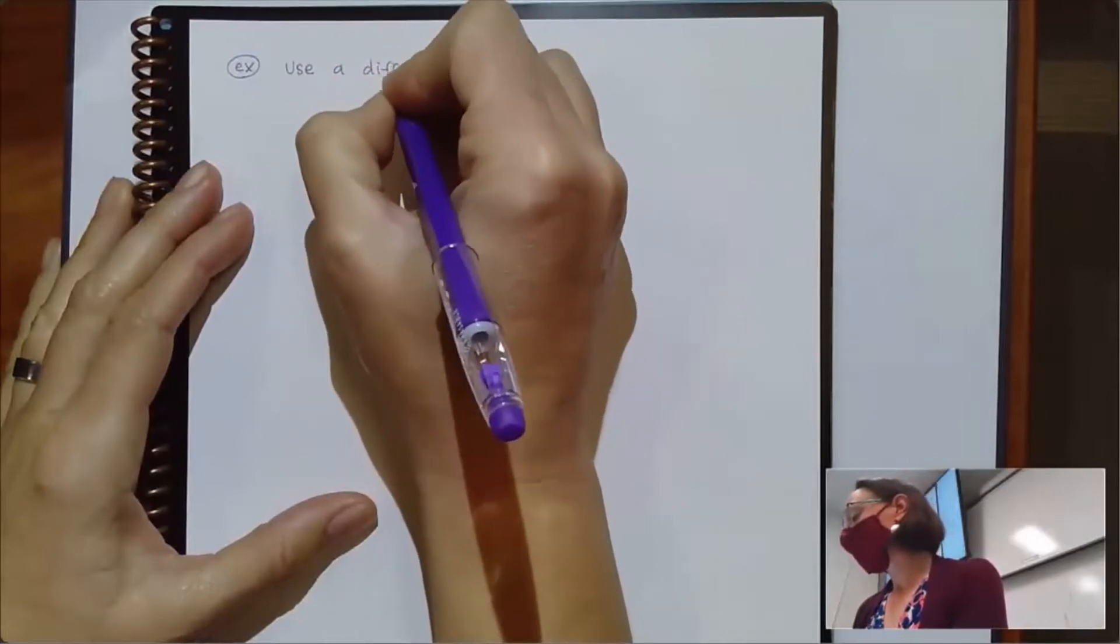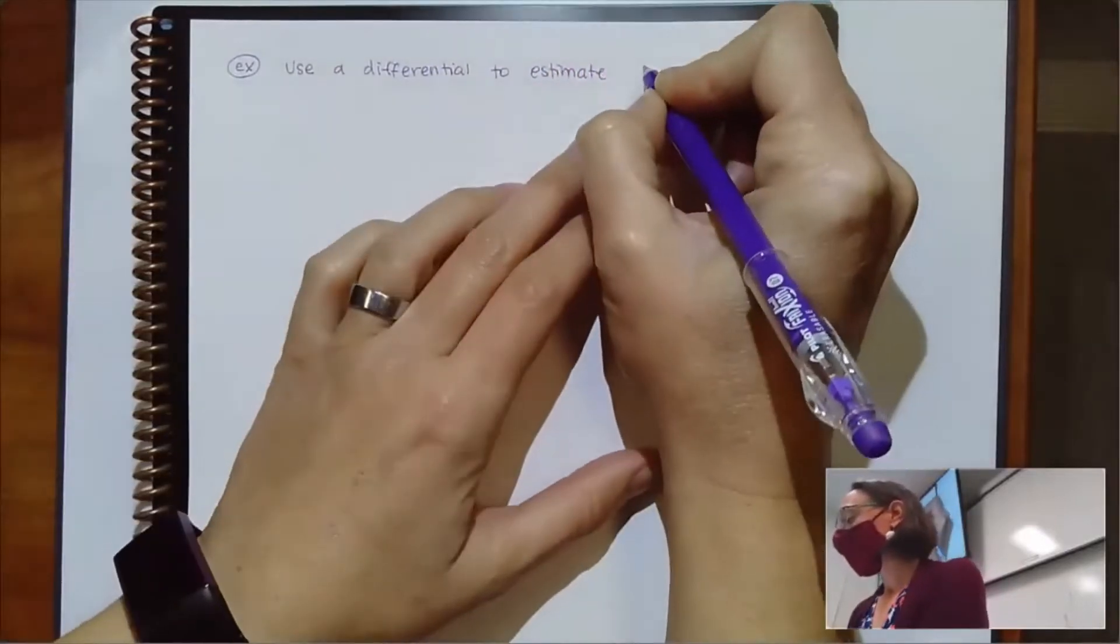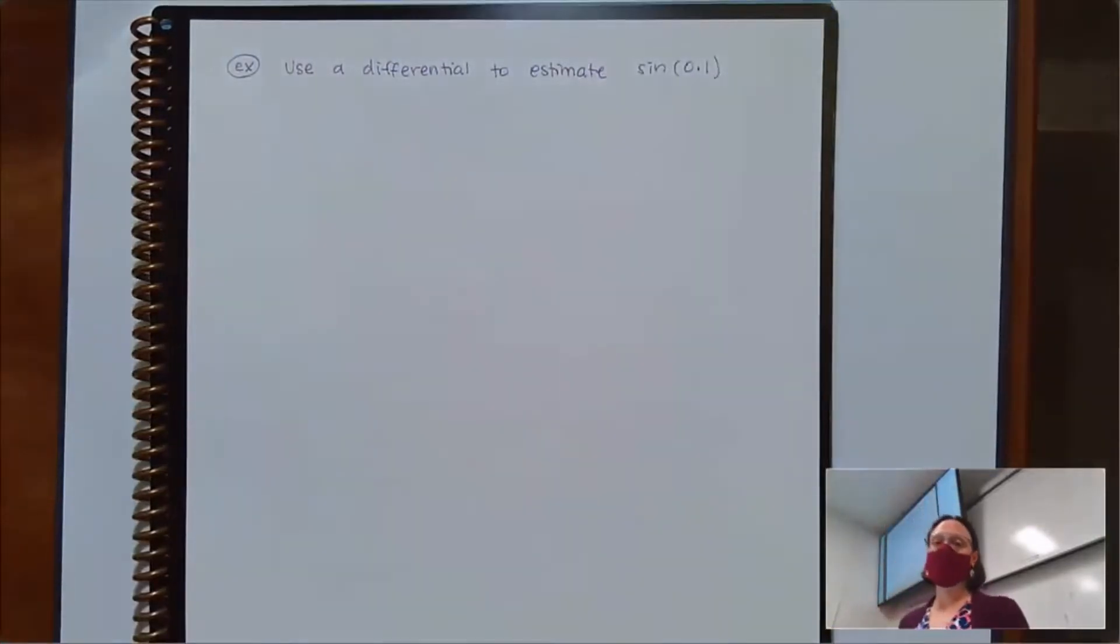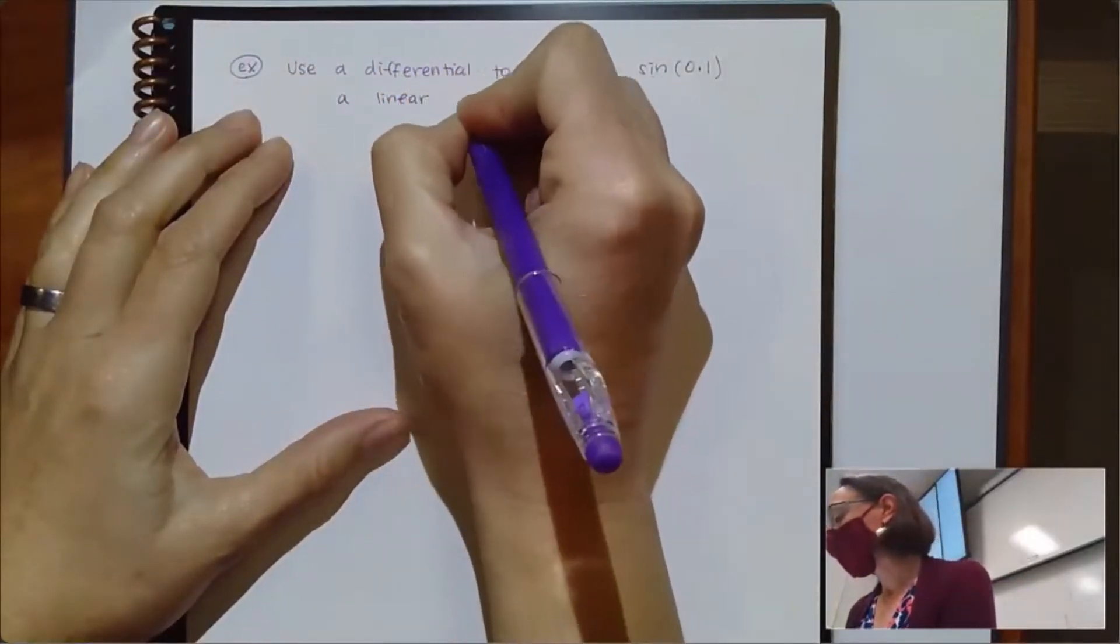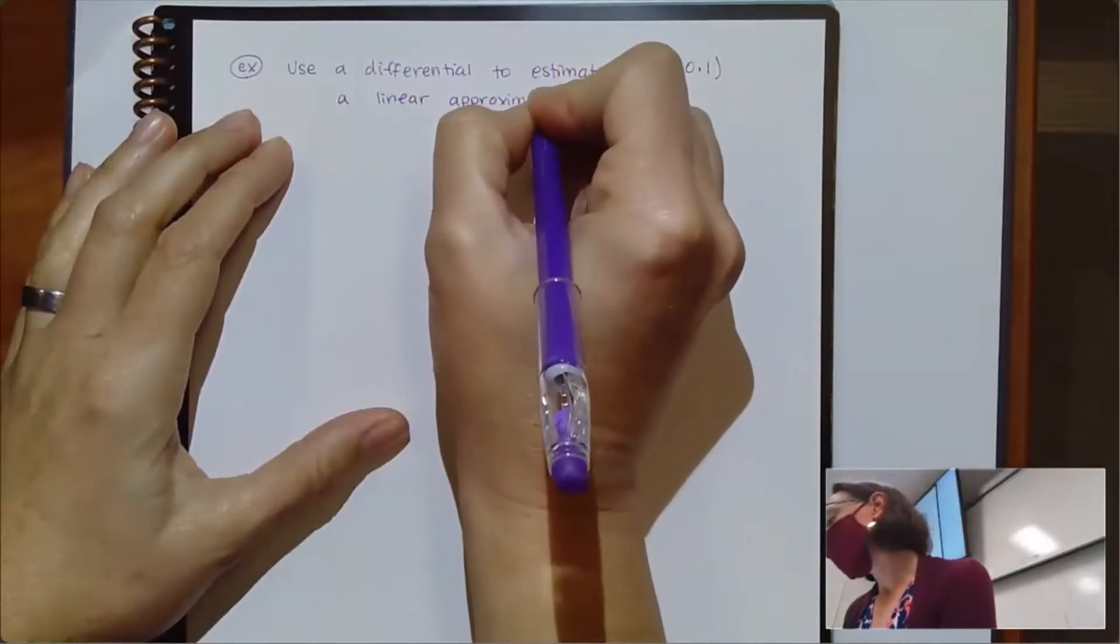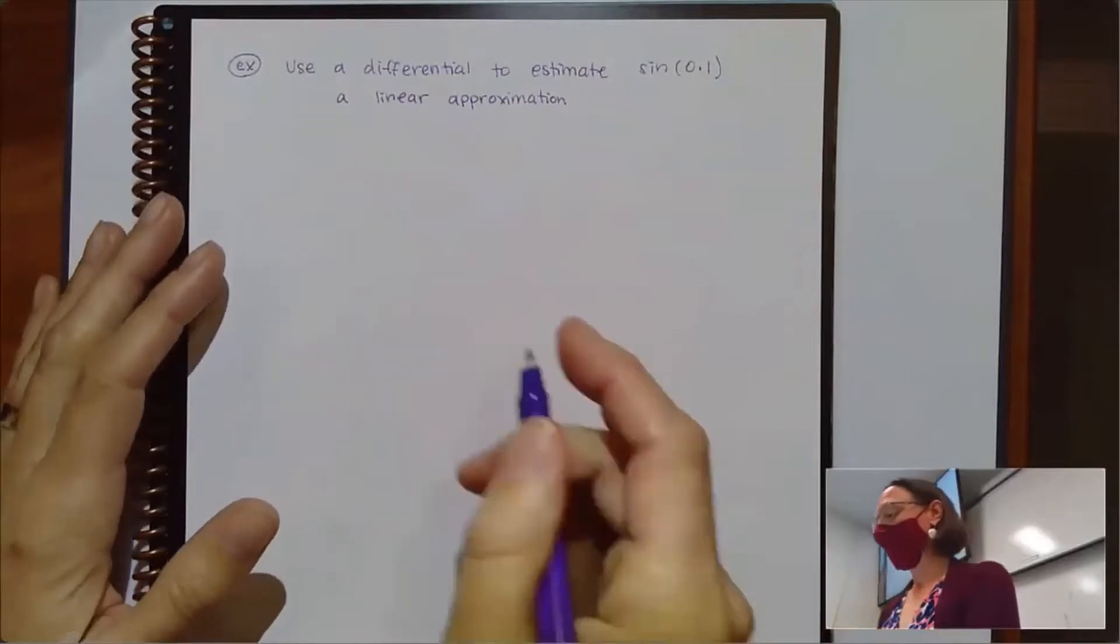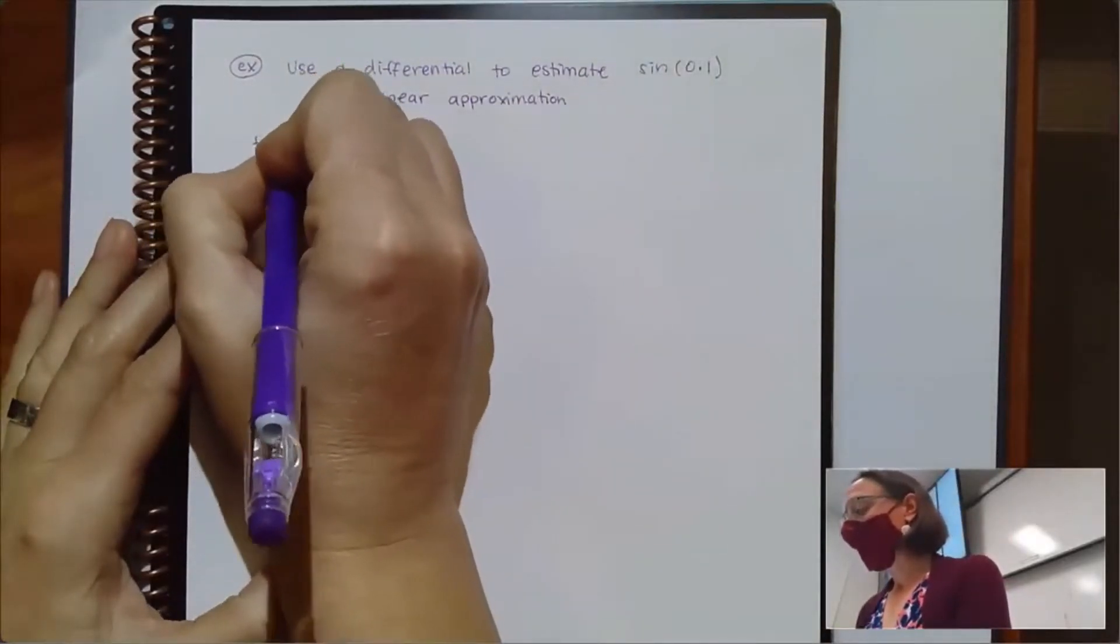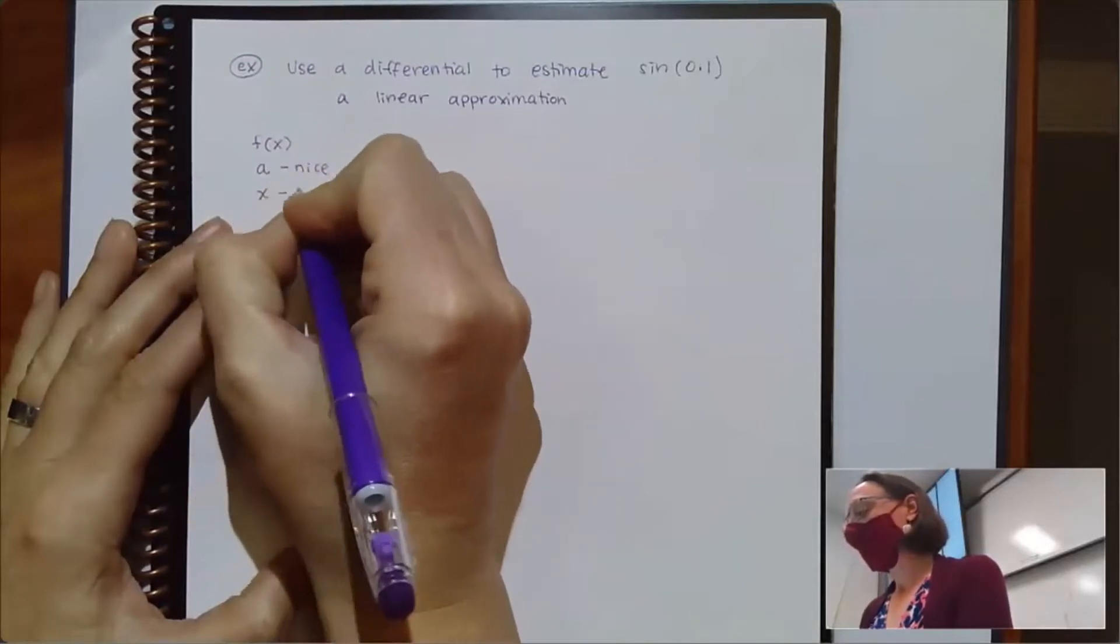Use a differential to estimate sine of 0.1. Sure, why not? So first of all, this could also have been phrased use a linear approximation to estimate sine of 0.1. Whether we're talking about a differential or linear approximation, either way, there are always three things that I need if we're trying to estimate something. Somewhere in the problem I need a function, I need a nice value, and I generally need the messier value.